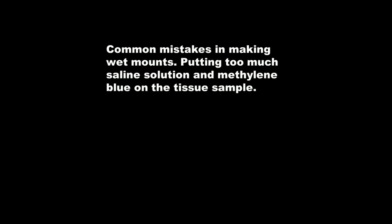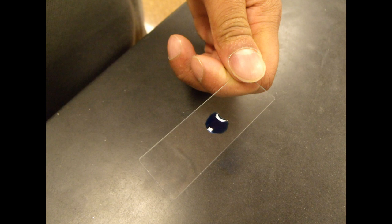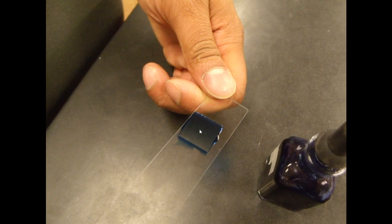Common mistakes in making these wet mounts is putting too much saline solution and methylene blue on the tissue sample. This would be an example of way too much saline solution and methylene blue and it would cause this cover slip to be floating around so that you won't be able to get a good sample and get a good look at the tissue.